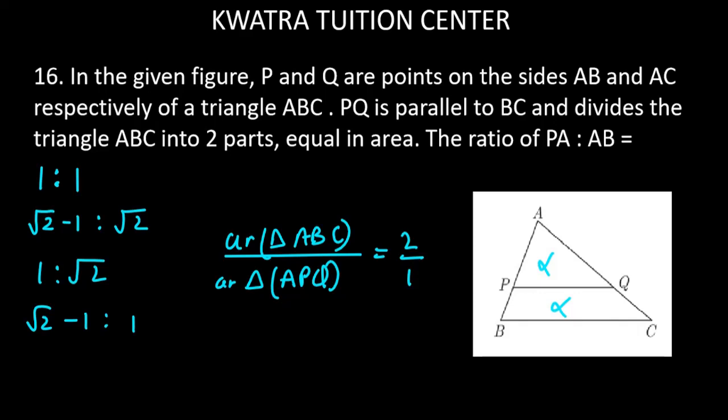Now to find the sides, we use the area relationship. For triangles ABC and APQ, the ratio 2 over 1 equals the square of the sides, which is AB square over AP square.